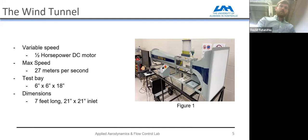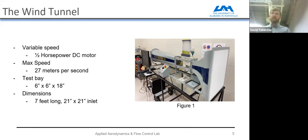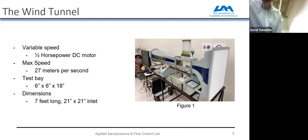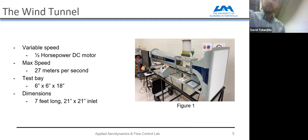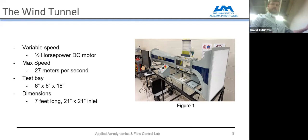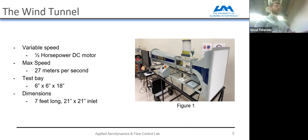The wind tunnel itself was shown earlier. It has variable speed on a half-horsepower DC motor, with a maximum speed of 27 meters per second — about 50 miles per hour of wind. The test bay is six by six by 18 inches. Its overall dimensions are seven feet long with a 21 by 21 inch inlet. It's not a large one by any means, but it's good for the basic steps.